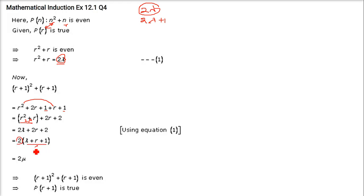Now this is again a constant, so you can put it like some μ. So 2μ. Now anything which is 2μ, this is a multiple of 2, so it is even. So if P(r) is true, P(r+1) is also true. This is proved.